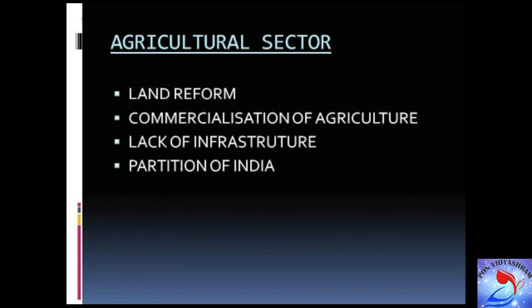The next one is forced commercialization of agriculture. Farmers were forced to shift to commercial crops from conventional subsistence crops. The British needed indigo for their textile industries in Britain, which exposed Indian agriculture to the risks and uncertainties of the market.